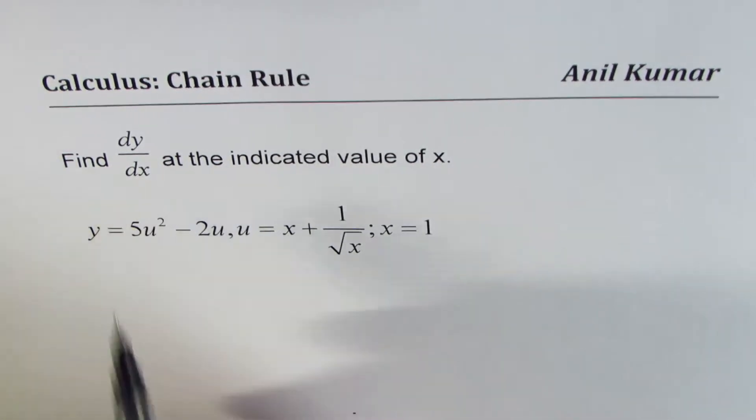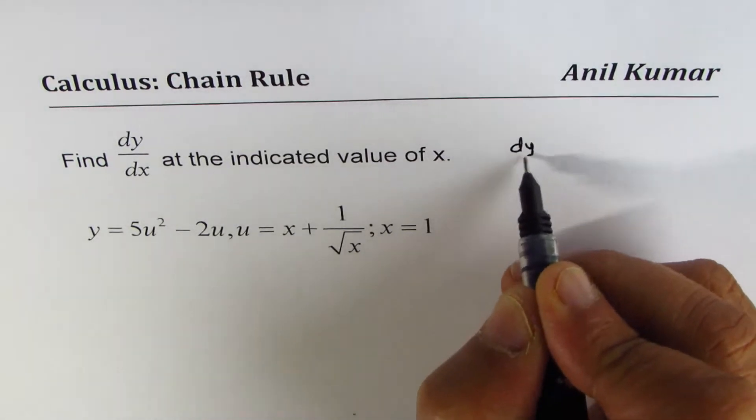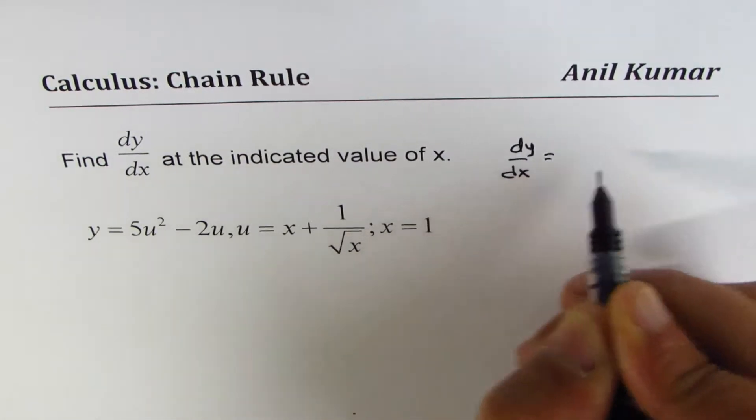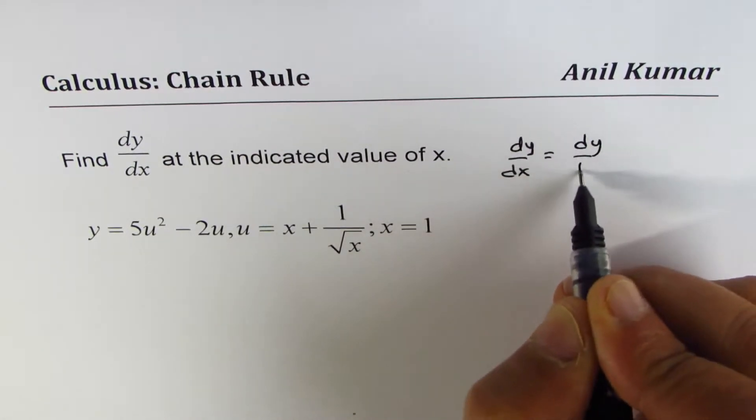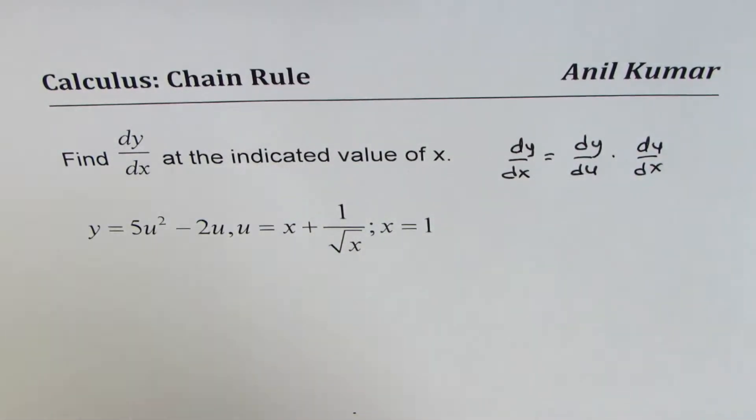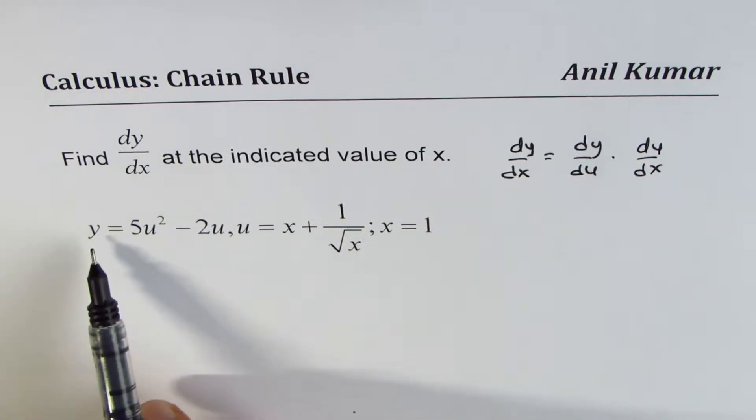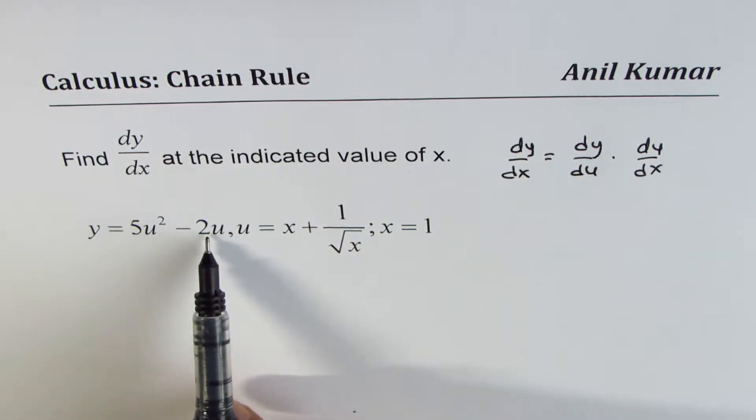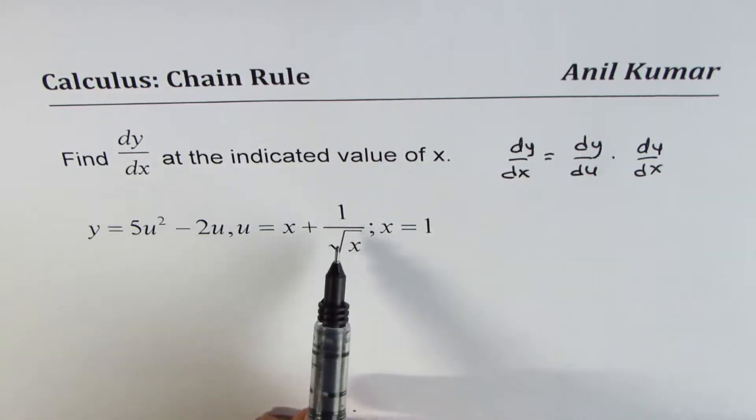Now, dy/dx could be written as dy/du times du/dx. That is the chain rule. We wrote it like this, since we are given y as a function of u and u as a function of x.